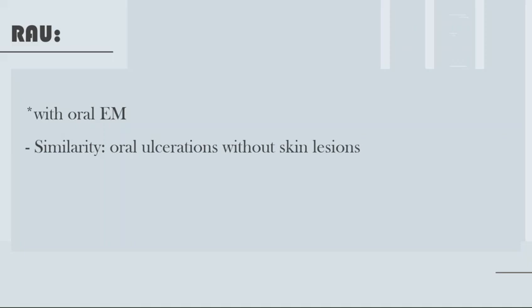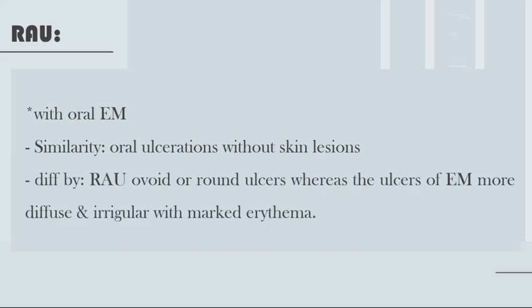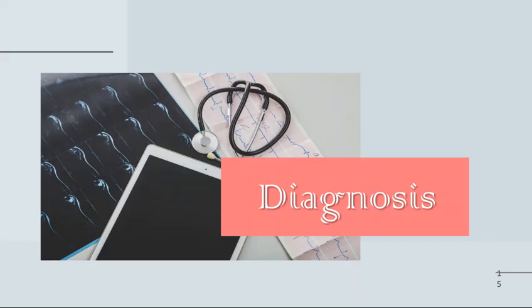Recurrent aphthous ulcers can cause confusion with oral erythema multiforme. The similarity is that we can have oral ulceration without skin lesions — as we said, in oral erythema multiforme we may have only oral lesions. Differentiation: recurrent aphthous ulcers, like herpes simplex virus ulcers, tend to be ovoid or round with a characteristic shape, whereas erythema multiforme lesions are diffuse and irregular, and can be marked with erythema.